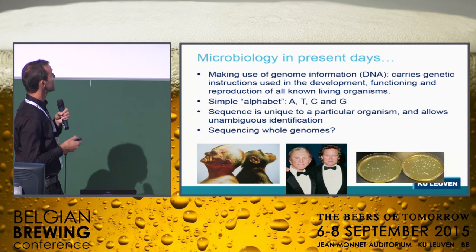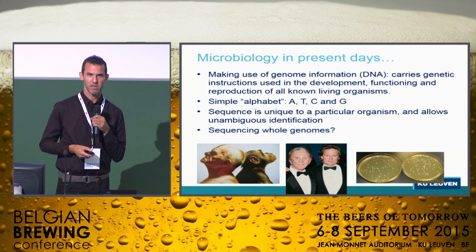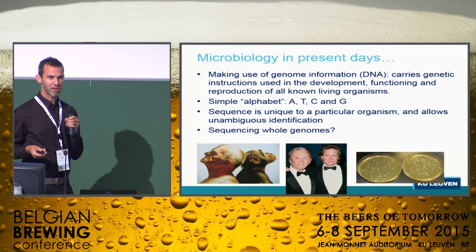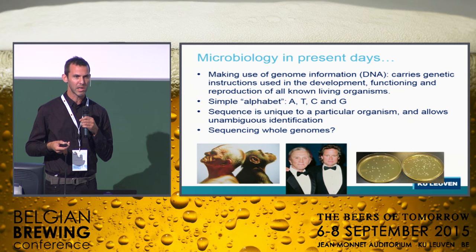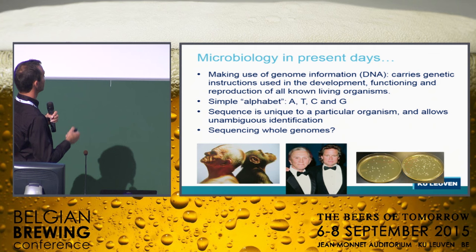These techniques make use of DNA. We all know CSI Miami — people use DNA to identify criminals. But we can also use DNA to identify microbes. DNA has only four letters — a very simple alphabet: A, T, C, G. The sequence of these letters is actually unique for particular organisms. Once you have the sequence, you know which microbe is there. Based on DNA, we can distinguish between man and animal, father and son, and also between particular microbes.